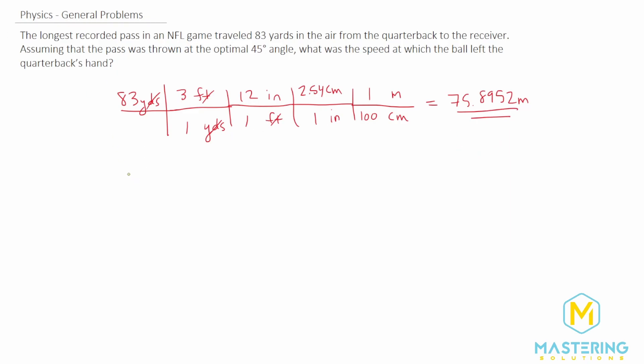Now we want to use the range max equation, which they say in the book that r max is equal to the initial velocity squared divided by gravity. We're trying to figure out though, what was the initial velocity. So we need to rearrange this for that.